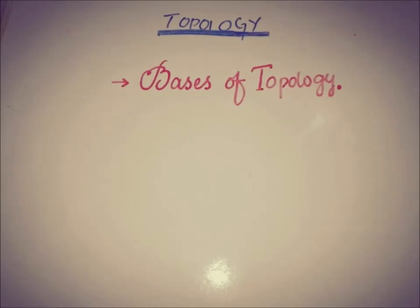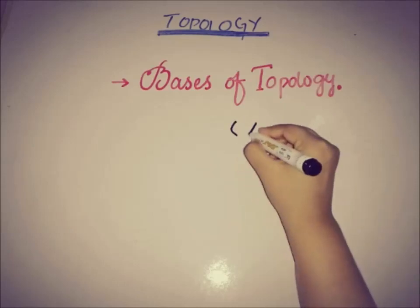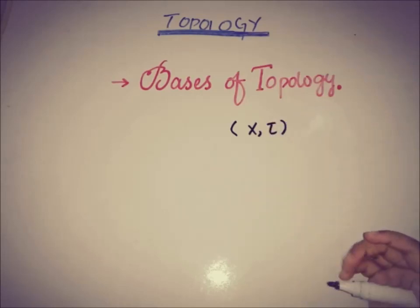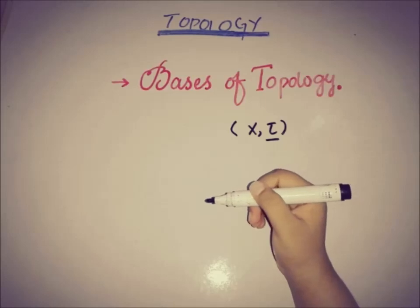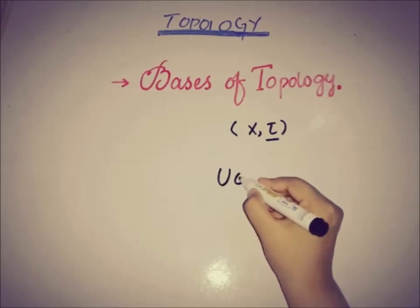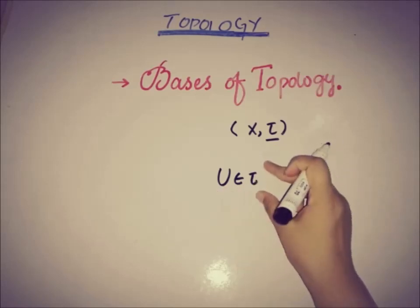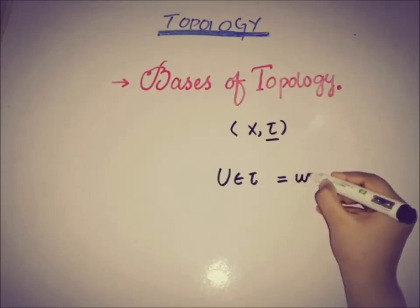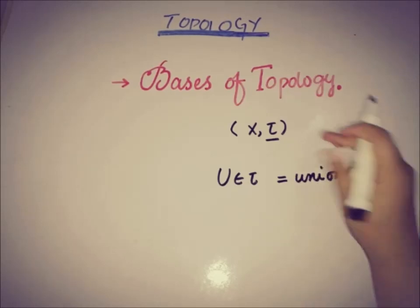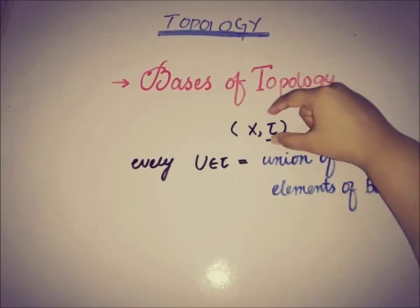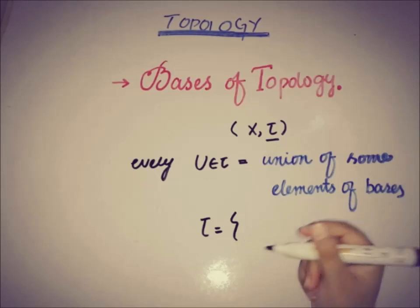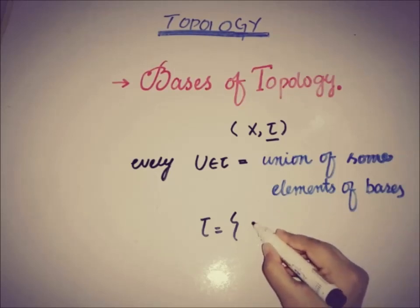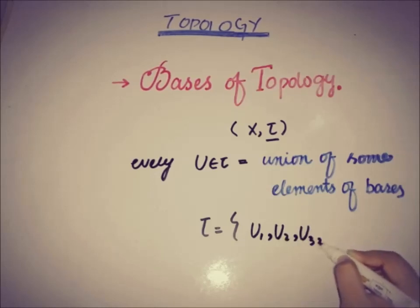There is a special type of subset of a topological space. The definition of basis is: if X and tau is a topological space, then a collection of subsets of tau is said to be a basis of the topology if it satisfies the axiom that every open set in the topology is equal to the union of some of the elements of the basis. Topology is also a collection of subsets of X, and in some cases we write the topology in a form that contains some open elements of X.